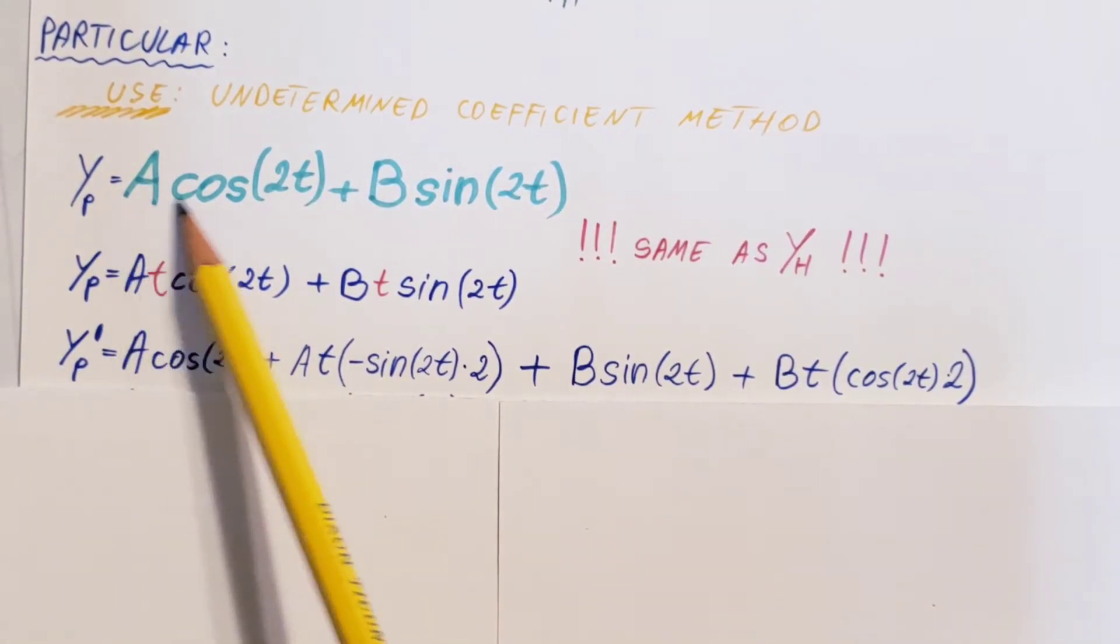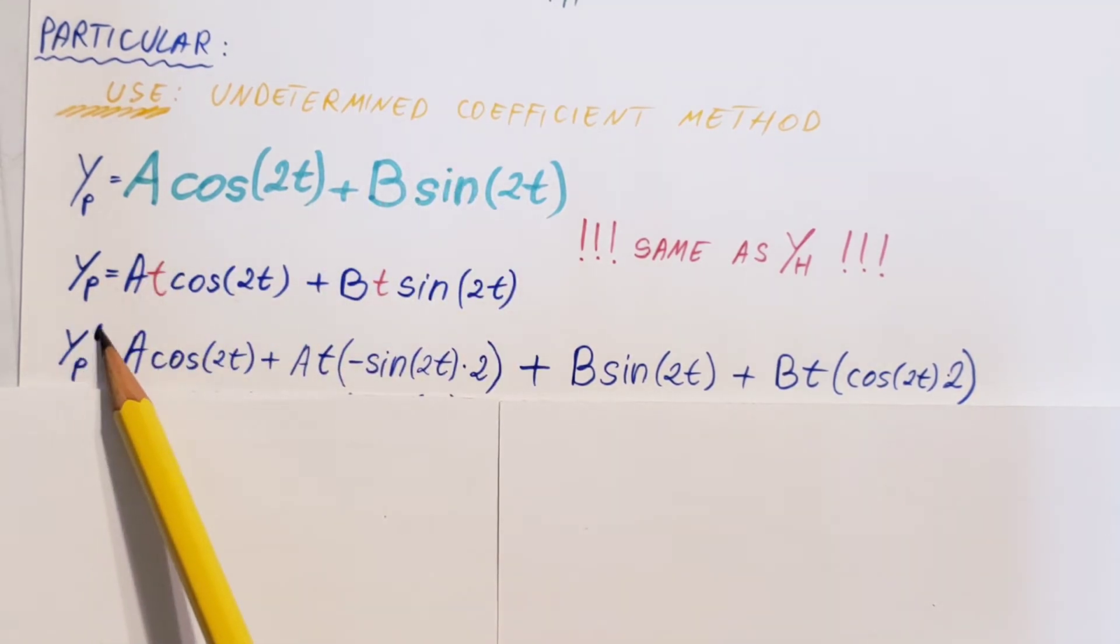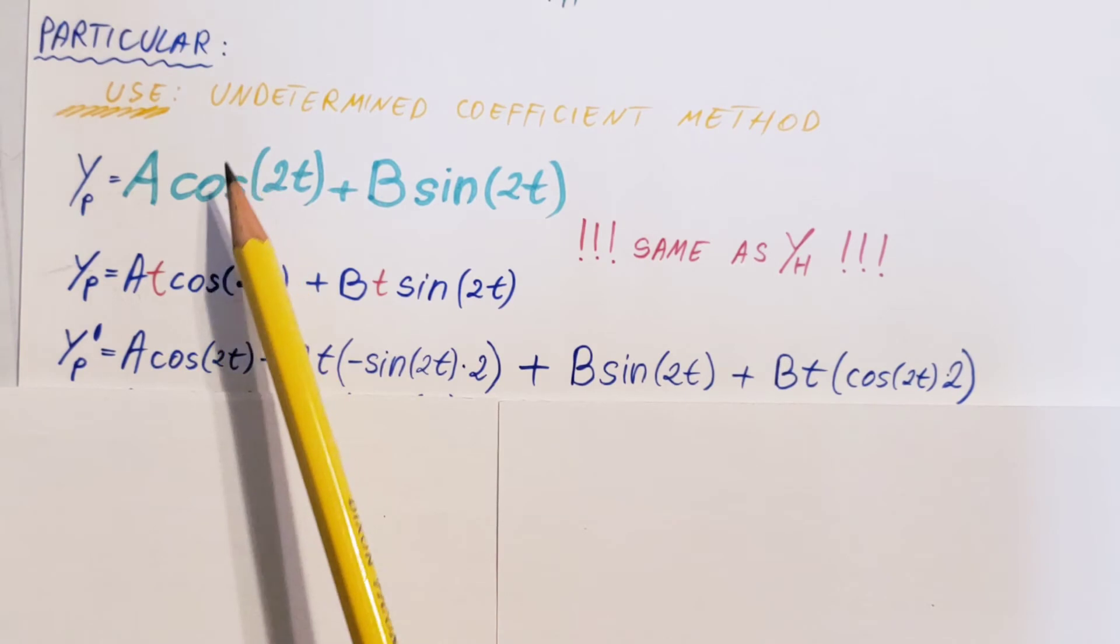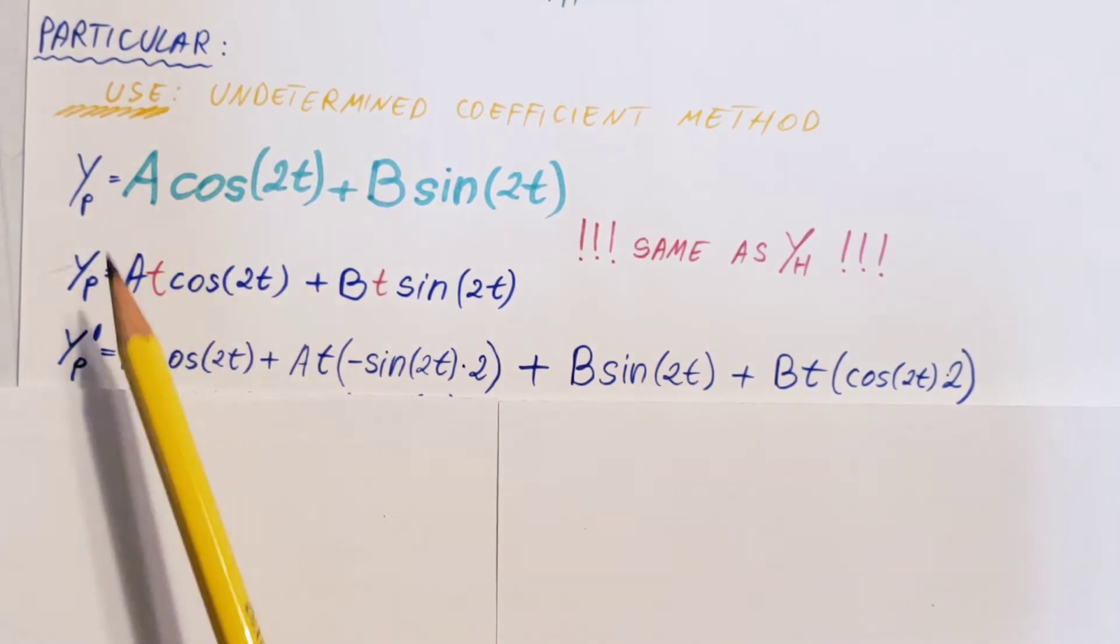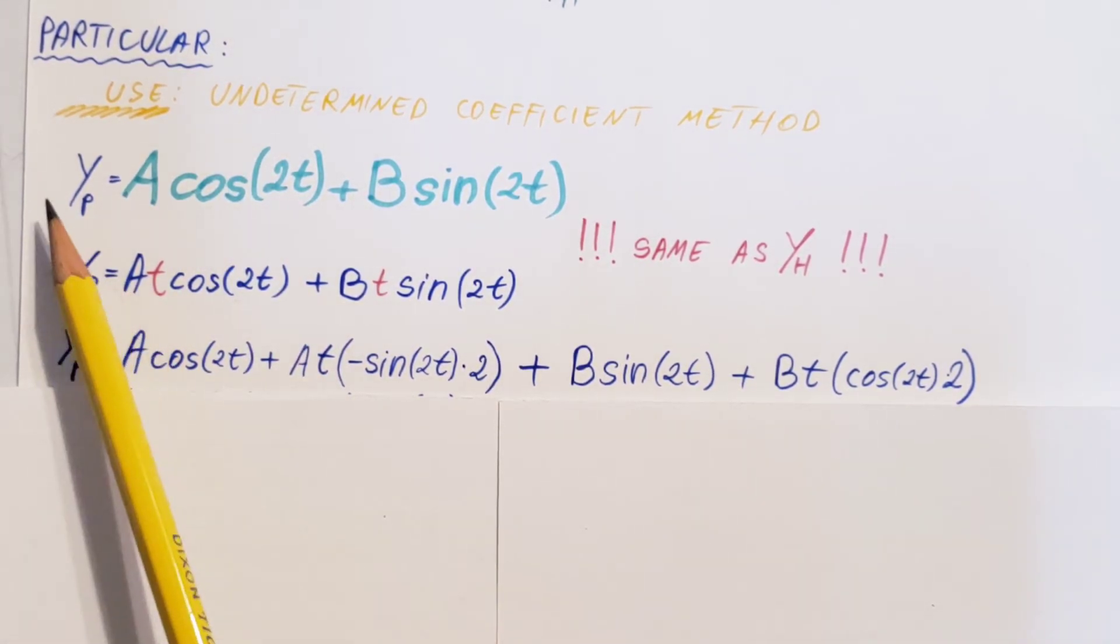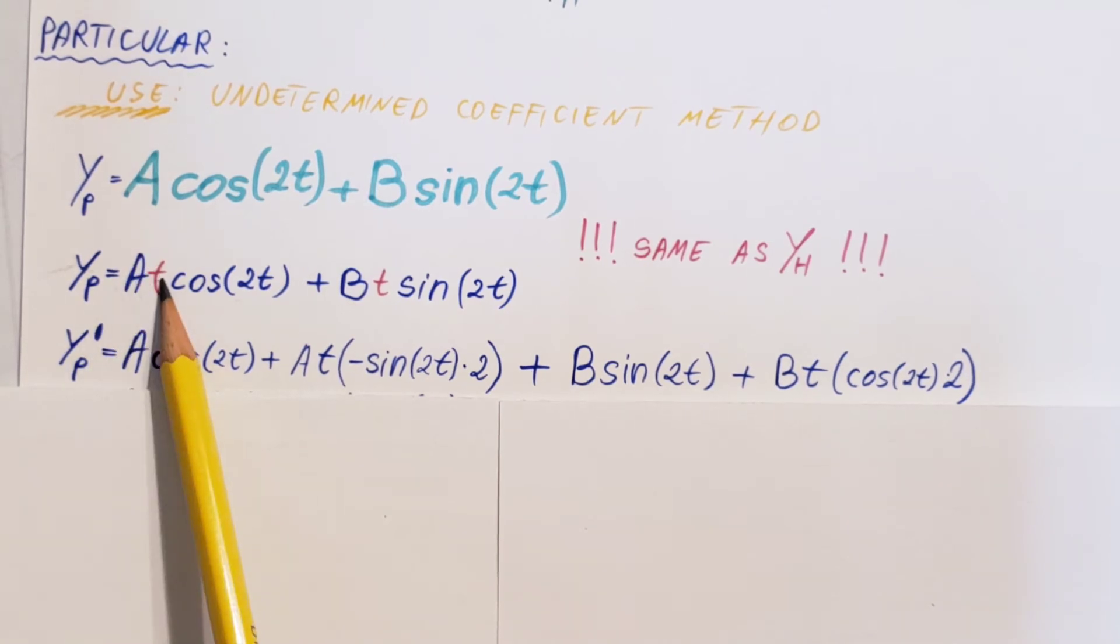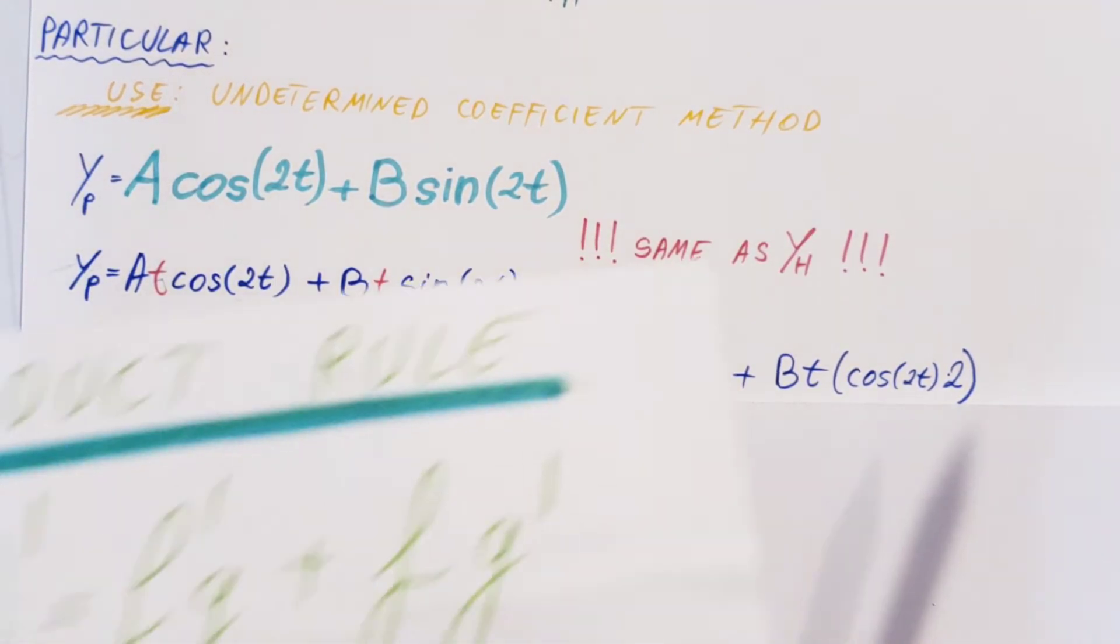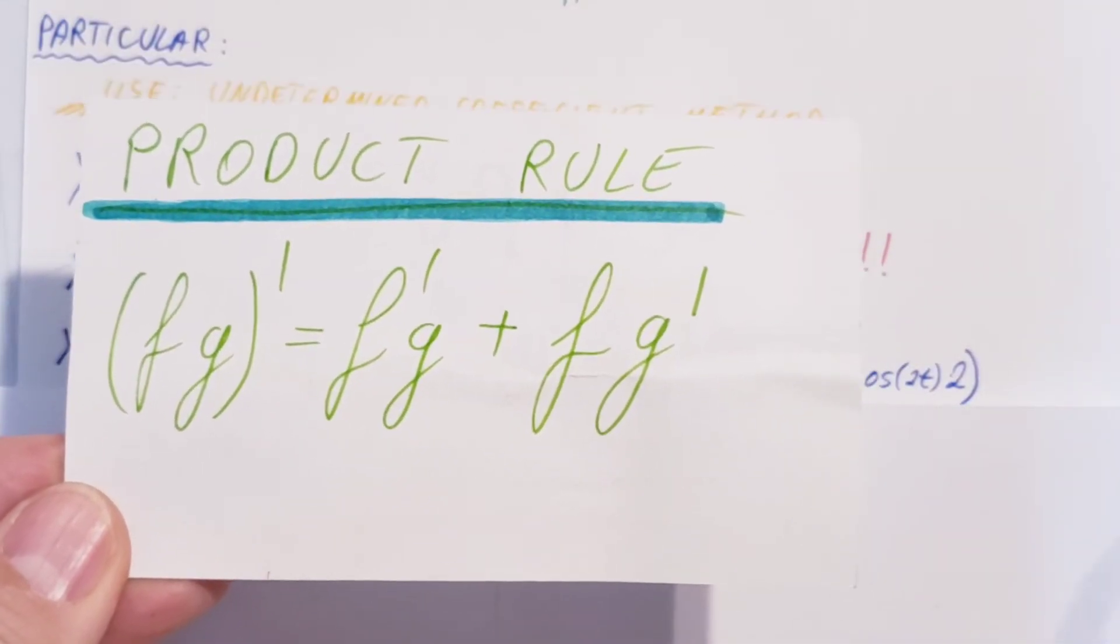Now, my original guess. First derivative of this guy. I keep pointing at this one. Don't confuse it. We are working with this one now. This one is obsolete. So, derivative of this one. A and t cosine 2t is simply the product rule, right? Here's the formula in case you forgot it.